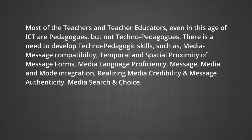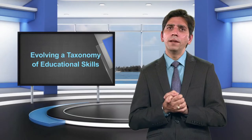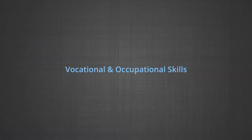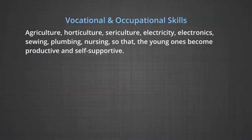When we talk about vocational and occupational skills, we can say that we need to identify, nurture and develop vocational and occupational skills in various areas such as agriculture, horticulture, sericulture, electricity, electronics, sewing, plumbing and nursing, so that the young ones become productive and self-supportive.